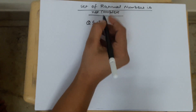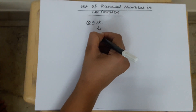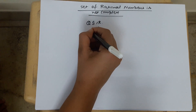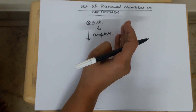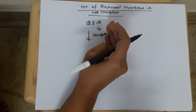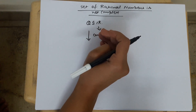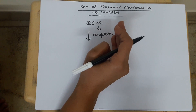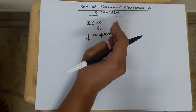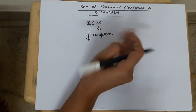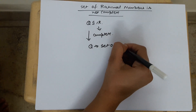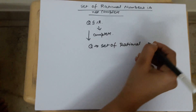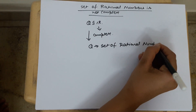It means that if our set is complete, it means that the subset will also be complete. In the next video, we will take an example where we talk about a subset of R being complete. It means that a complete space can have subsets that are complete and incomplete. We are going to discuss different counter examples. In today's video, we are talking about the set of rational numbers.